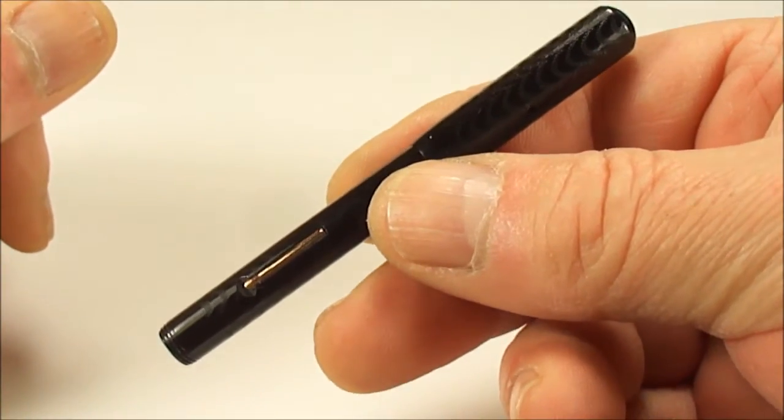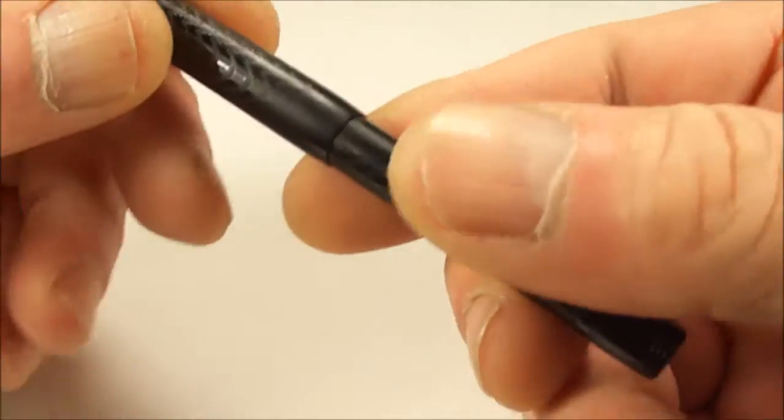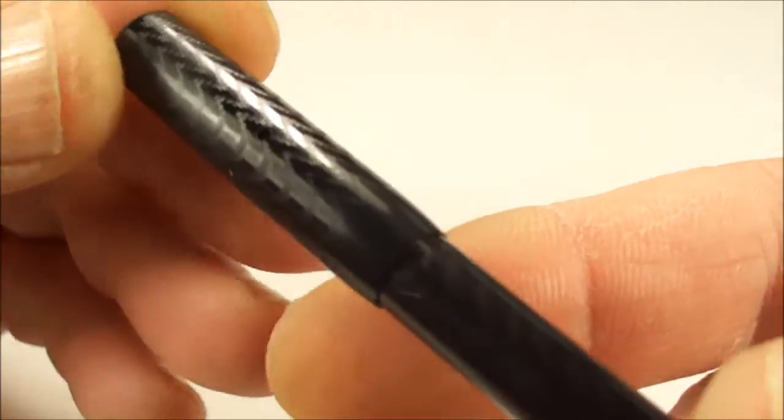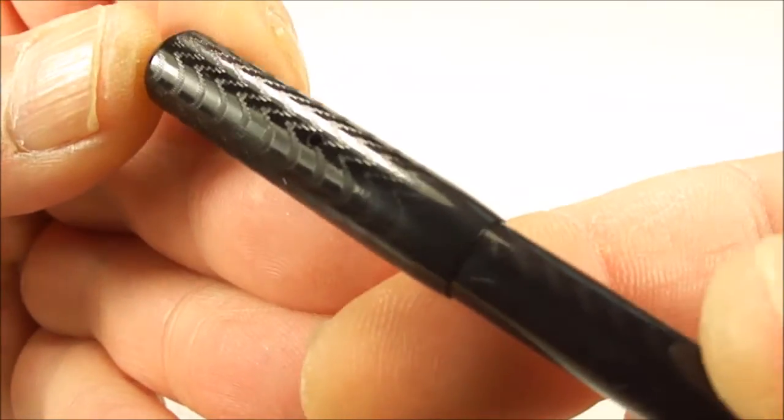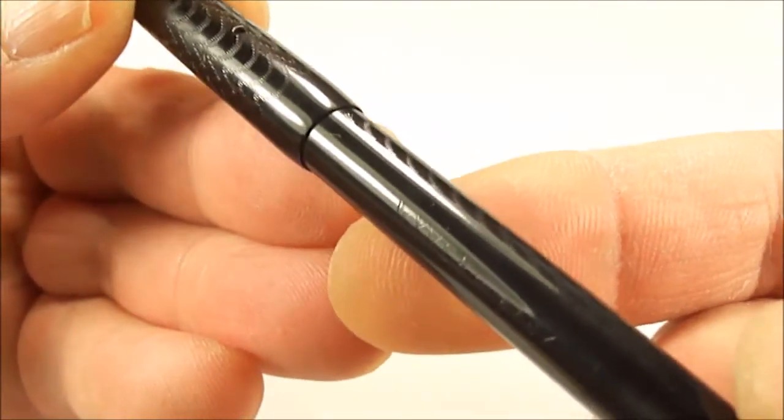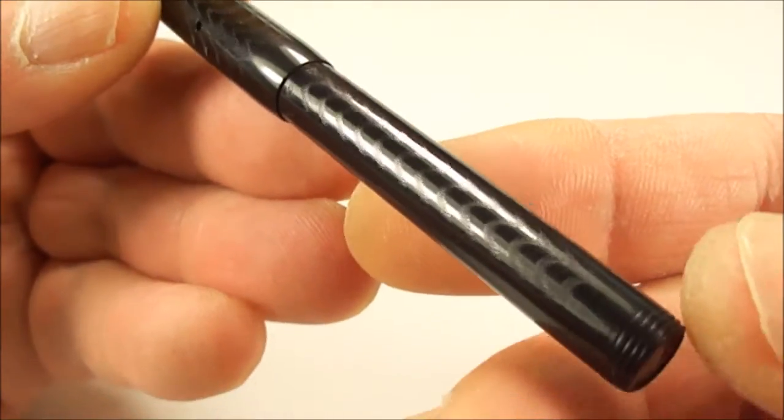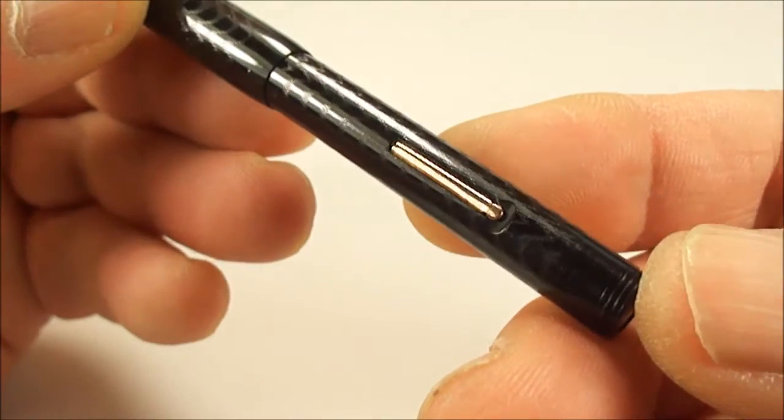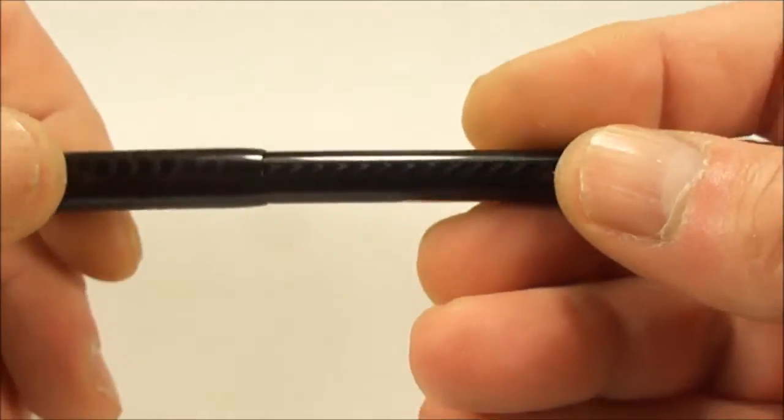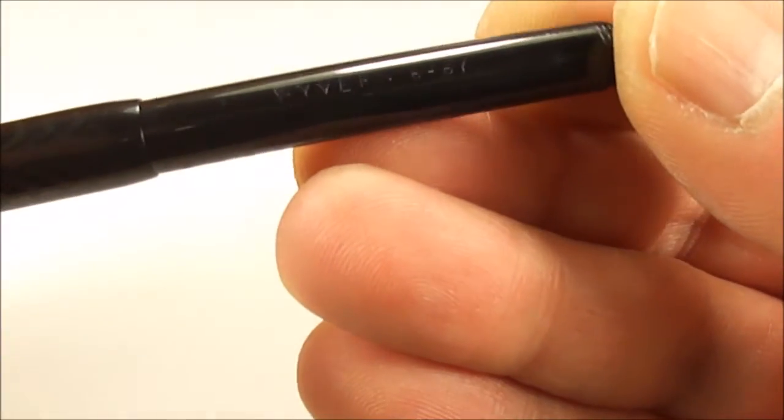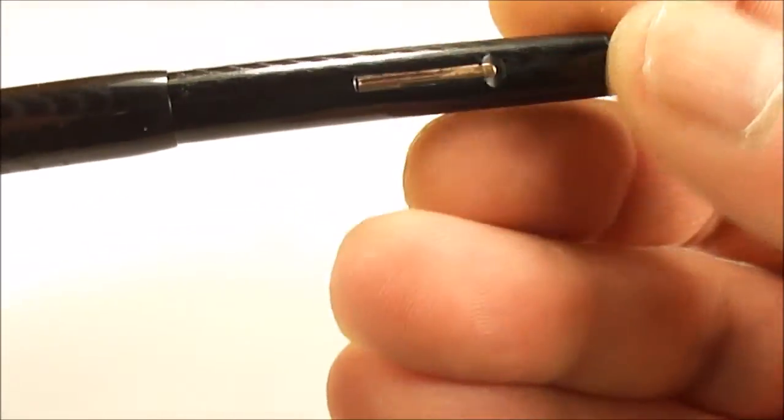It comes in this lovely black hard rubber and as you can see, it's got a lovely chevron chase pattern to the pen. It's a lever fountain pen. Now let's show you the barrel imprint if I can see it over the camera.